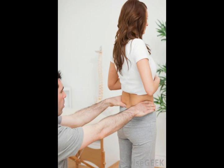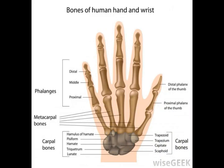Differences between the male and female skeletal systems are also influenced by bone development. Hormones play a large role in the growth of bones. For males, testosterone is the hormone that affects bone growth and shape, while the female hormone that influences bone development is called oestrogen.